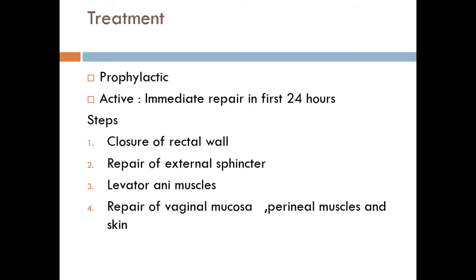The treatment of perineal tear — the most important treatment is prophylactic. During delivery of the fetal head, it is very important to maintain flexion of the fetal head and to make proper support for the perineum. Prophylactic episiotomy will also protect against perineal tear. Active treatment includes immediate repair within the first 24 hours. After 24 hours, the wound is potentially infected, and it is better to postpone repair for 3 to 6 months after delivery until tissue involution occurs, along with treatment of infection.